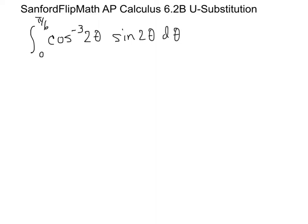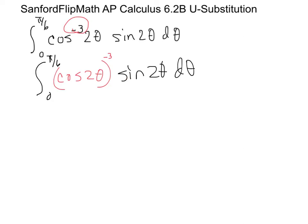This next one looks scary. Remember that the exponent applies to cosine, so that part alone is cosine(2θ) to the −3 power. I'll continue rewriting this. There's a sine(2θ) dθ. Take a moment and look at this: think about what's on the inside and whether the derivative of the inside is present here, ignoring any constant multiplications.